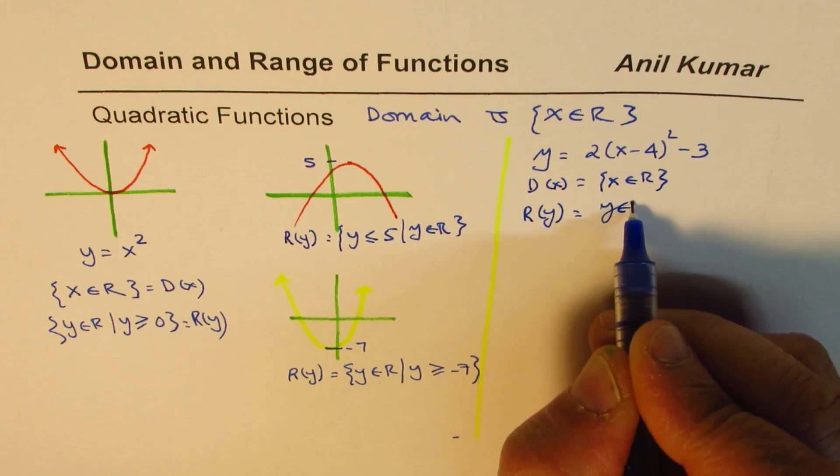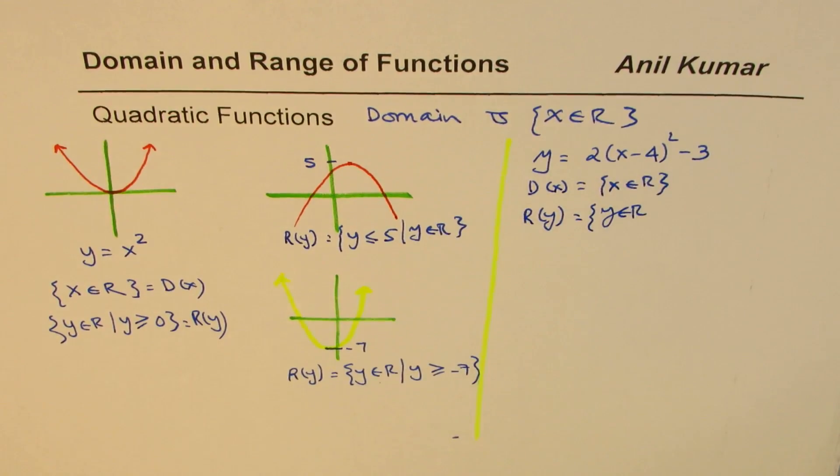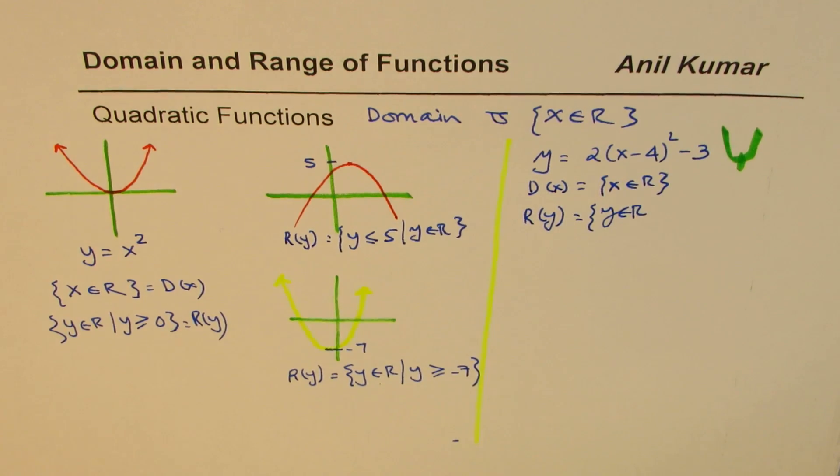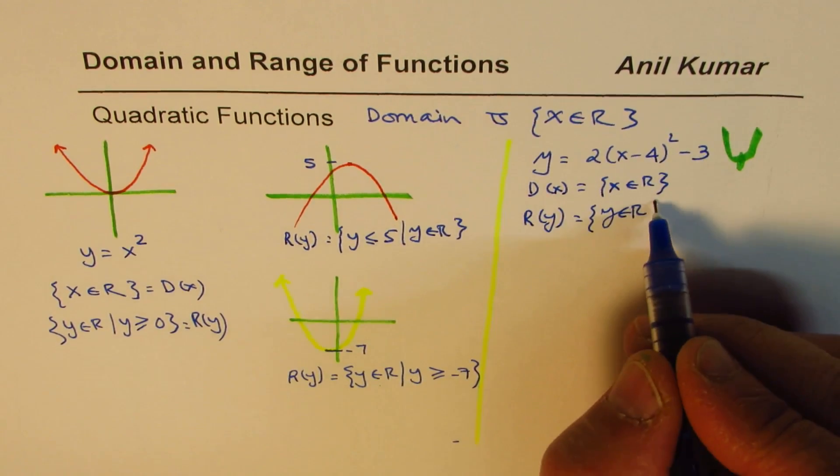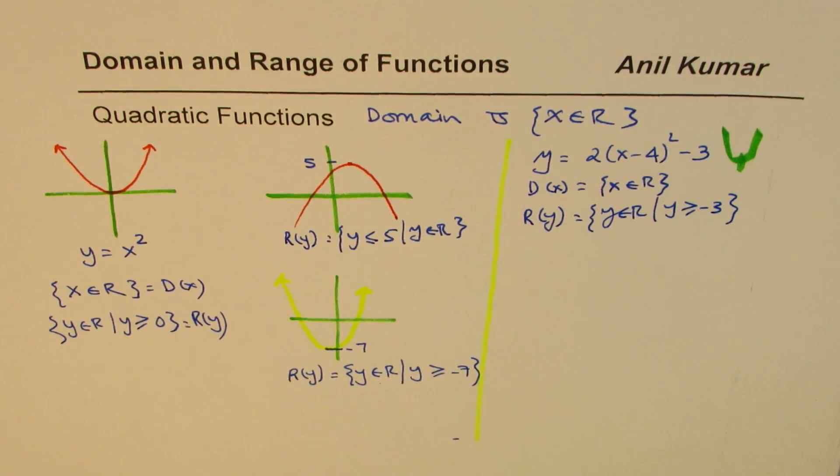Range will be y belongs to real numbers. Now, since this is positive, it opens upwards. So this function opens upwards, and this vertex is at minus 3. So we say y is greater than or equal to minus 3. So from this equation, we could get domain and range.